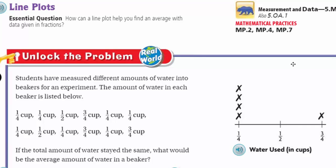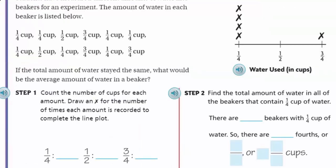It says students have measured different amounts of water into beakers for an experiment. The amount of water in each beaker is listed below. Let's see, we have a quarter cup, quarter cup, half cup, three quarter cup, quarter cup, quarter cup. And then we have a half cup, a quarter cup, three quarter cup. If the total amount of water stayed the same, what would be the average amount of water in a beaker?